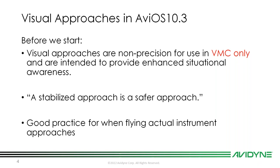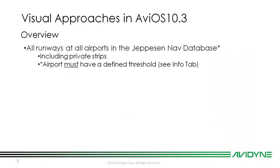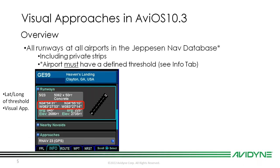When can we use visual approaches? You can use them at all runways and all airports in the Jeppesen NAV database, including private strips. However, that airport must have a defined threshold — meaning there is a latitude/longitude for the runway threshold in the Jeppesen NAV database. We can see that in the info tab on our IFD. Looking at Heaven's Landing in Clayton, Georgia, under GE99 runways, it has a lat/long for the runway thresholds, so you can do a visual approach there.